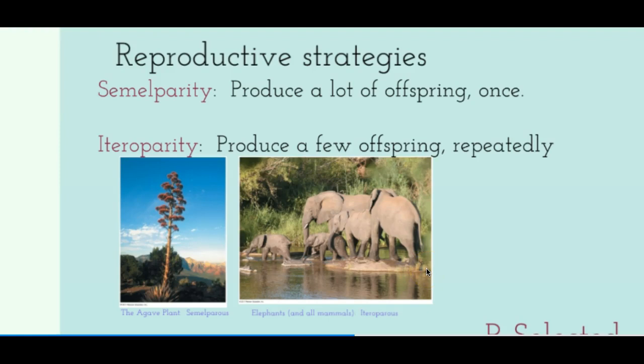There are two reproductive strategies based on how many times a species reproduces. The first is semelparity, where the organism produces offspring only once throughout its life and then dies, typically producing a large number of offspring at once. An example is the coho salmon, as well as the agave plant, which grows in deserts with unpredictable rainfall and poor soil. An agave accumulates nutrients in its tissues for years, and once there's an unusual rainfall, it grows a very large flower and produces many seeds, then dies.